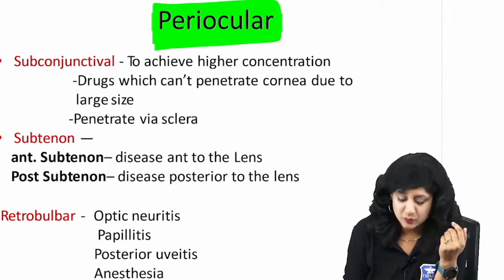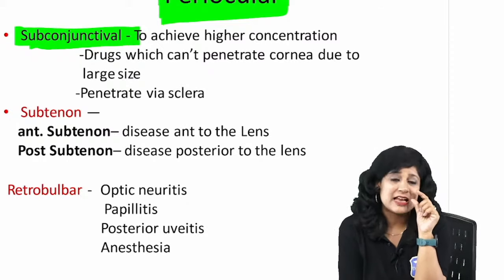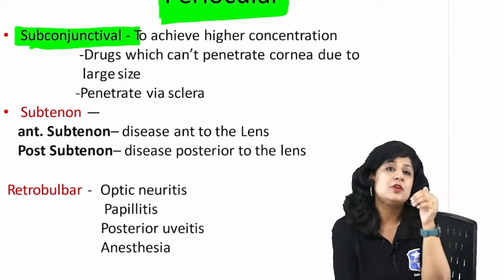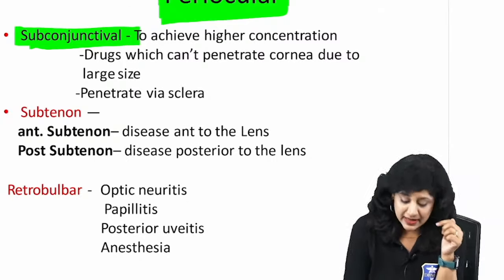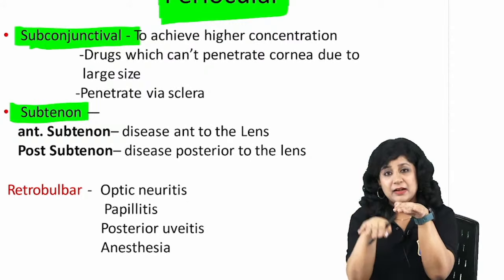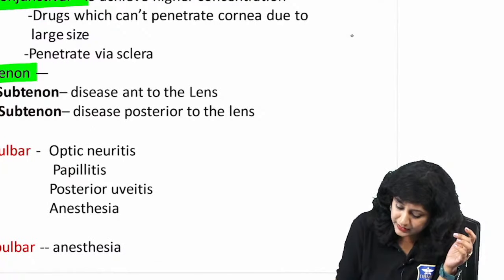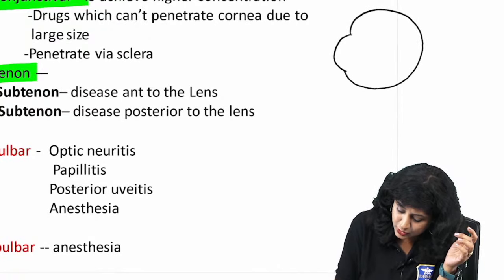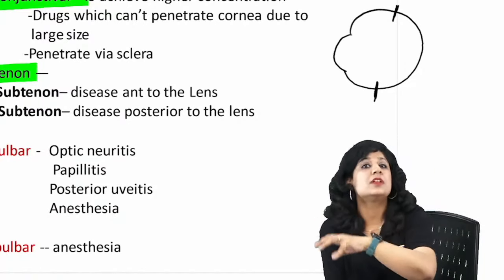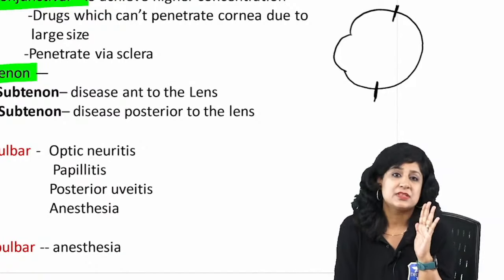Subconjunctival injections are used when a drug's particle size is too large to penetrate the cornea — in that case it penetrates via the sclera. Subtenon injections are given above the sclera and beneath Tenon's capsule, which surrounds the eyeball. They can be anterior subtenon (anterior to the equator) or posterior subtenon (posterior to the equator), depending on the target location.